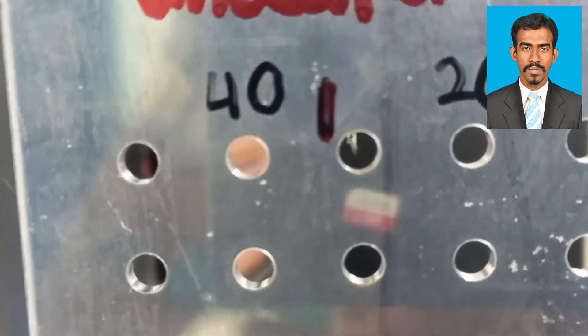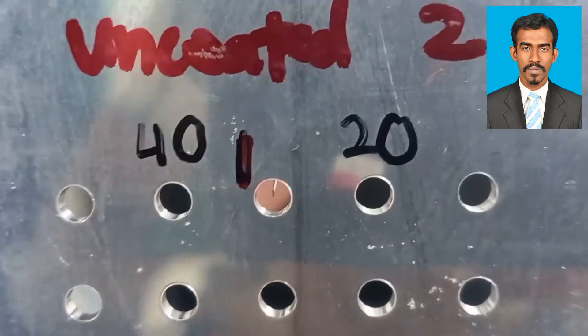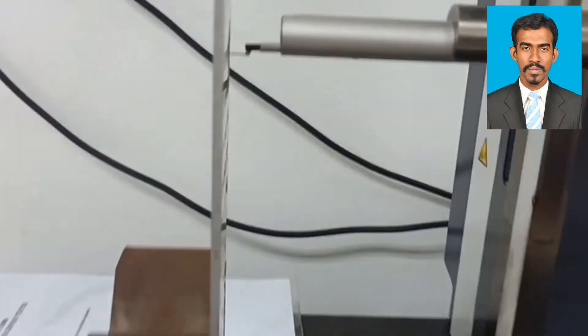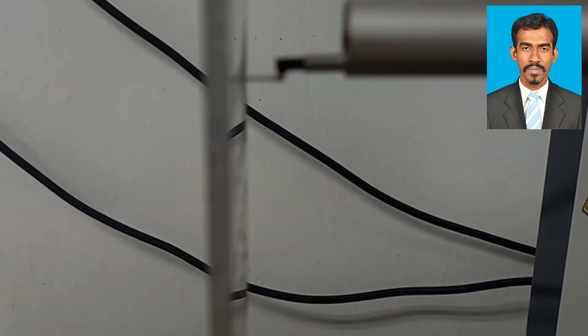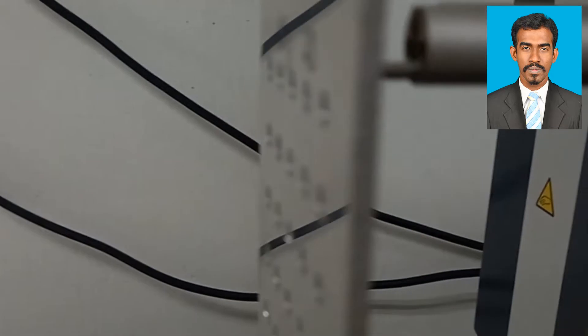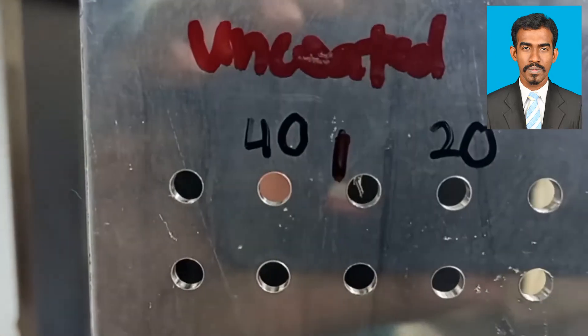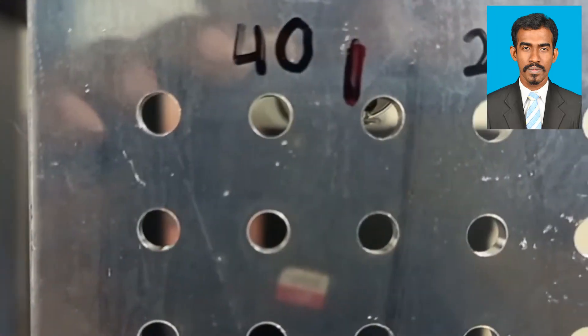This is the tip. Now we should move it very precisely to the center by adjusting the joystick in the X and Z directions. You can see the tip is now inside the hole and it is almost at the center.